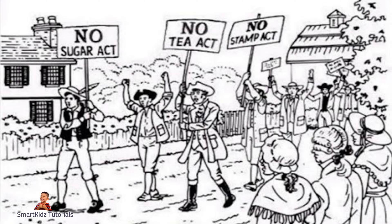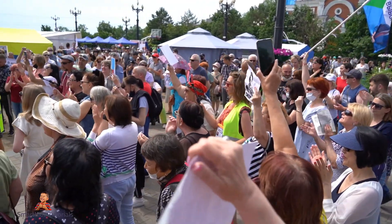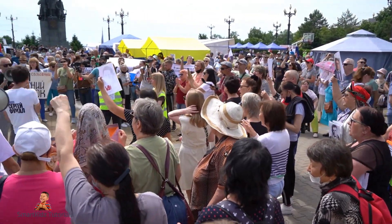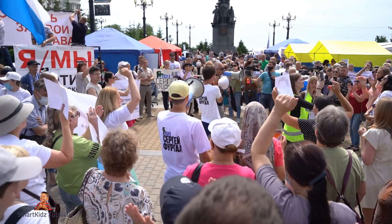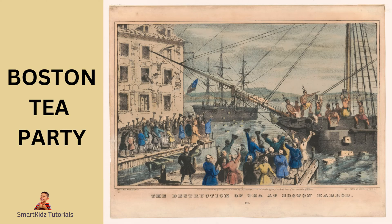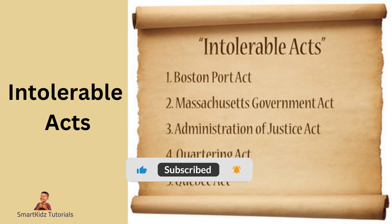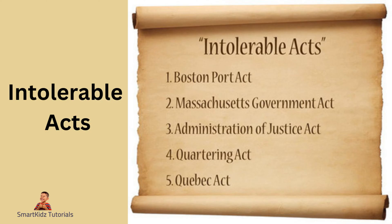The British Parliament passed several laws that taxed the colonies, including the Sugar Act of 1764, the Stamp Act, and the Townsend Acts. These laws were met with protests, boycotts, and acts of civil disobedience from the colonists, who believed that they were being taxed without their consent. In 1773, the British government passed the Tea Act, which gave the British East India Company a monopoly on the tea trade in the colonies. This led to the Boston Tea Party, where a group of colonists dressed as Native Americans boarded British ships and dumped crates of tea into Boston Harbor in protest. In response, the British government passed a series of punitive measures known as the Coercive Acts, also called the Intolerable Acts by the colonists.